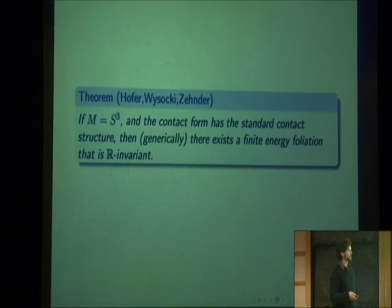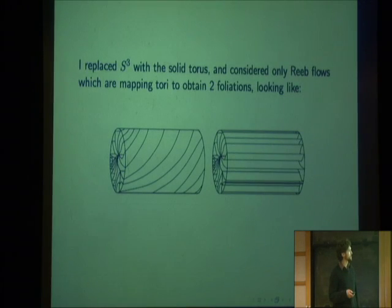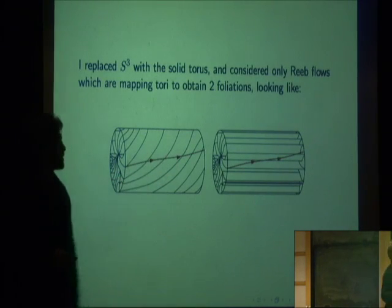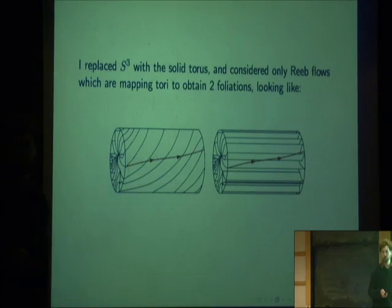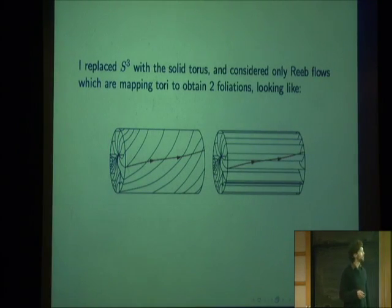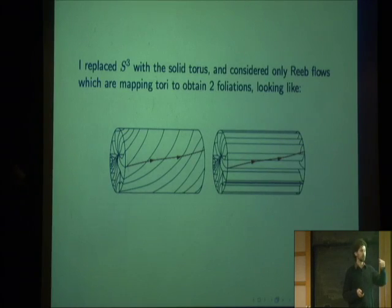They showed you can construct these even if your manifold is S³ with the standard contact structure — in some cases not just generically but full smooth ones. If you're replacing S³ with a solid torus and considering only Reeb flows that go around like this, then in my thesis I constructed two such foliations. They had the property that on the boundary, if the Reeb flow has a certain winding, the two foliations you find are the ones for which the winding on the boundary is one of the closest two integers to the actual flow. Beyond knowing Conley-Zehnder indices of orbits in the middle and that they share an orbit, I didn't have much further control.